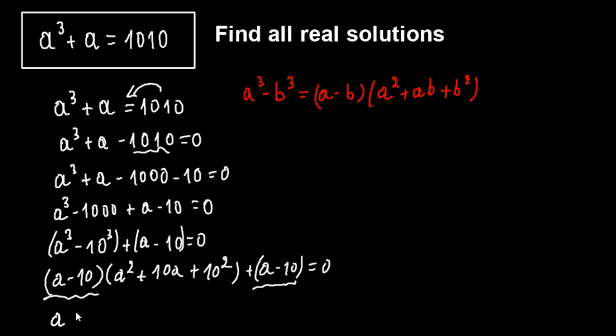We factor out the common factor, so we write it as a minus 10 times a to the second plus 10a plus 101 equals 0.